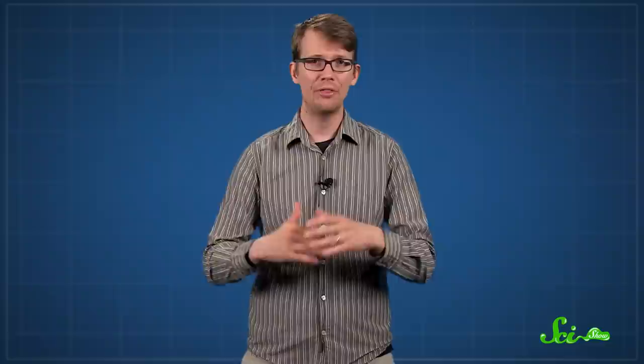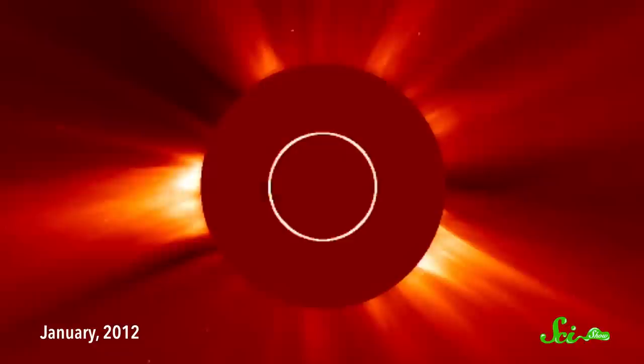That storm did knock out some telegraphs, but all things considered, we did okay. But in 2012, we had a very near miss. The sun sent out a massive flare that would have done serious damage if it had hit us. Luckily, it was pointing in a different direction.